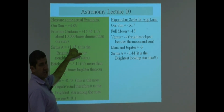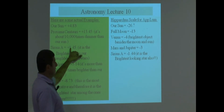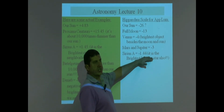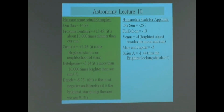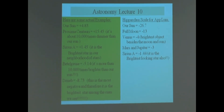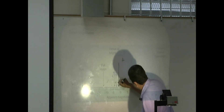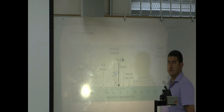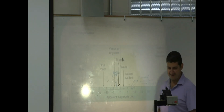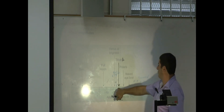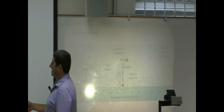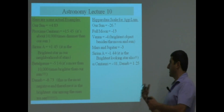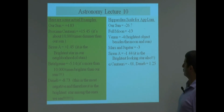Sirius A at negative 1.44 is the brightest-looking star in the sky. As you go toward less negative and then positive values, stars get a little dimmer. Alpha Centauri A is about negative 0.01. Deneb is 1.25. Betelgeuse is 0.45. All of these you can see on a good clear night without any telescope.